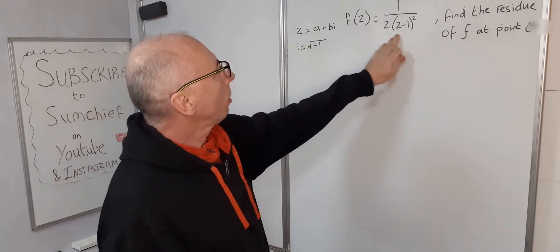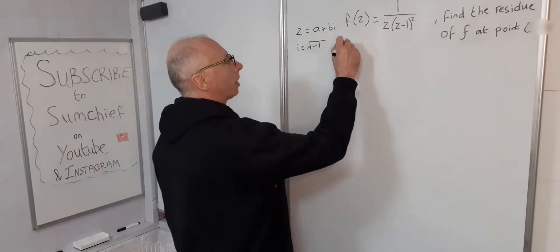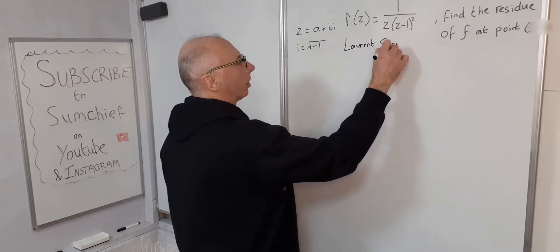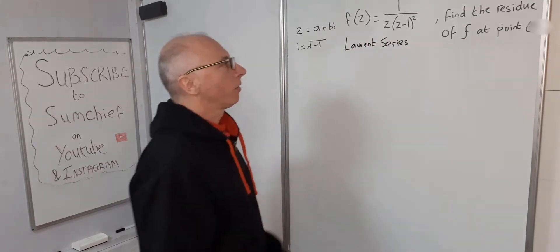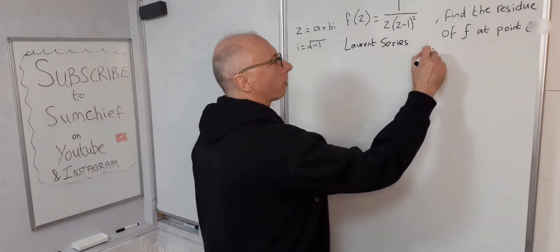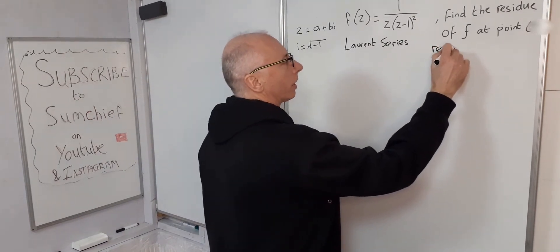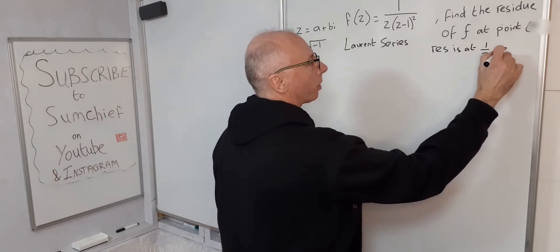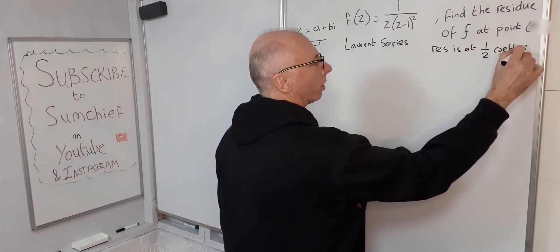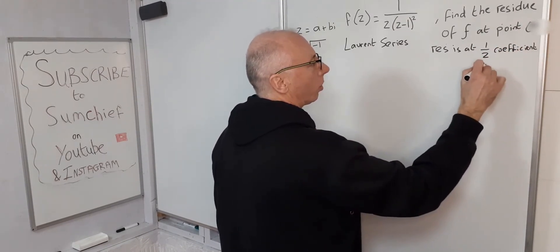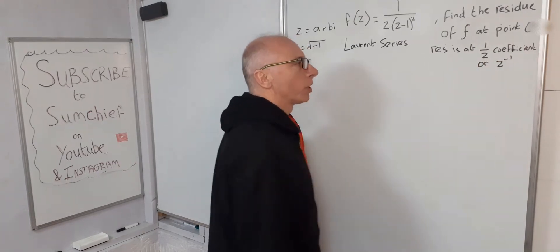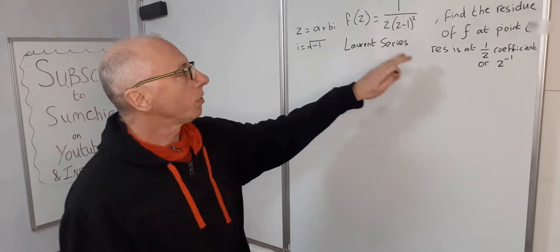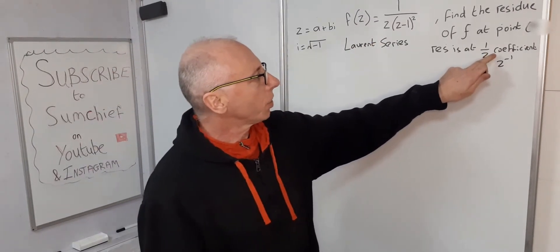So how are we going to find this? Well the Laurent series looks like the way forward, and for the residue we're looking for the 1 over z coefficient, or z to the minus 1. That's where we're going to find the value of the residue, so we're looking at the coefficient of 1 over z.